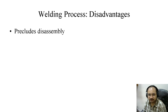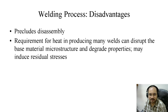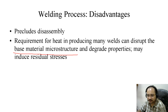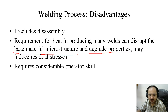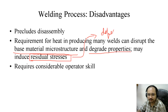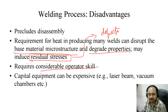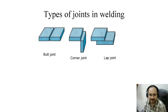Disadvantages of welding: it precludes disassembly. The requirement for heat in producing many welds can disrupt the base material microstructure, as the material undergoes a welding cycle and degrades properties. Heat may induce residual stress, which is a major problem in welding, and it contributes to a number of defects. Welding requires considerable operator skill. Capital equipment can be expensive — for example, laser vacuum chambers and electron beam welding equipment.